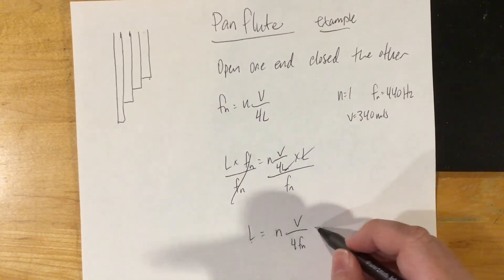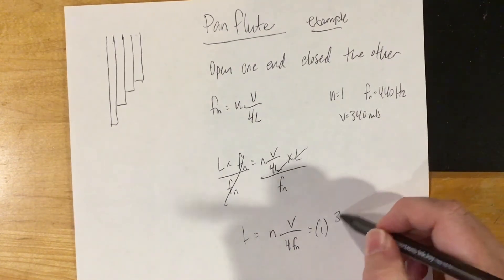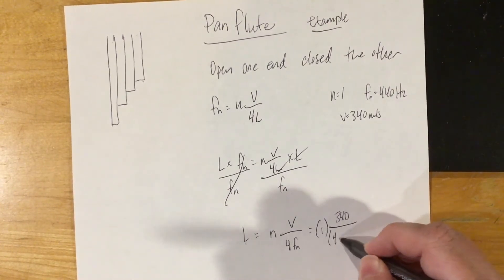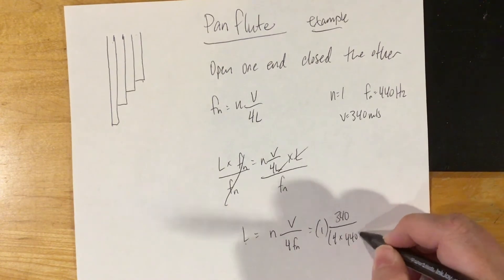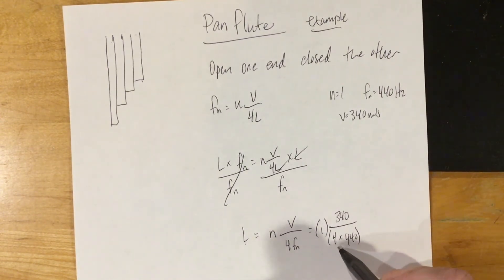n is 1, our v is 340 meters per second, and then you'll divide by 4 times the 440 there. When you're doing that, make sure that you keep the parentheses on the outside and use the order of operations correctly.